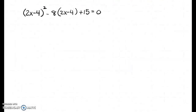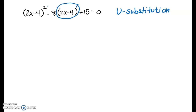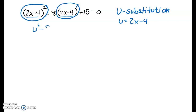Now let's use u-substitution, which I mentioned two videos ago but didn't use yet. We're always checking: is the exponent on one term half of the exponent on the other, and are the bases exactly equal? Yes — but in this case we don't have a single-term base; we have a binomial as the base. So I'm going to let u equal 2x minus 4, and when I substitute it in, I get something much easier to solve.